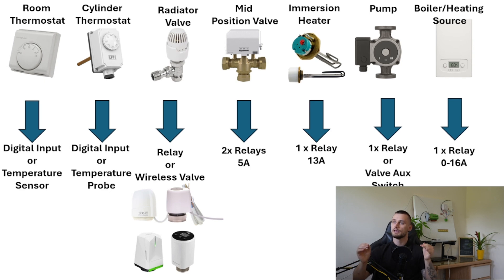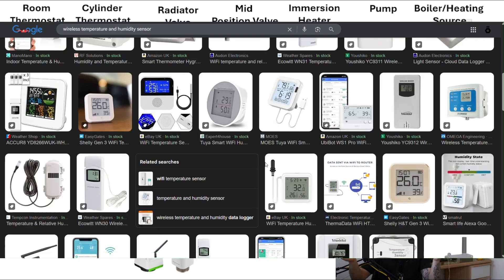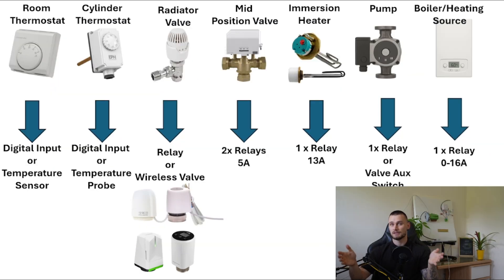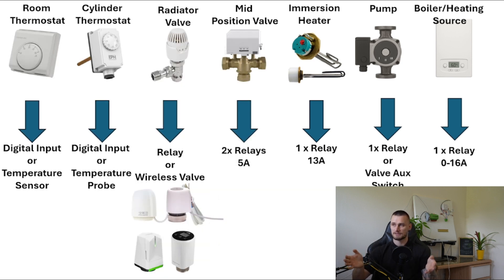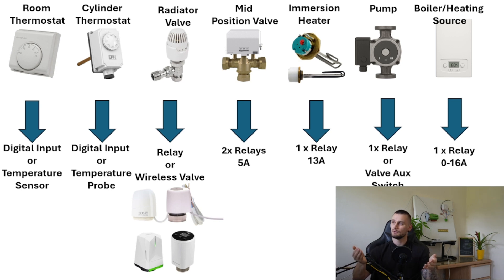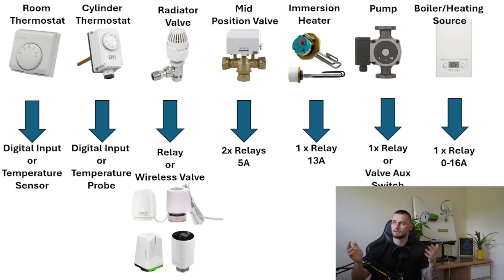If you want full system control, you can replace pretty much every single element. Room thermostats can be any wireless temperature sensor or hardwired if the property allows. The cylinder stat can become an input feeding satisfaction status back into your system. Radiator valves can be replaced with wireless or wired electronic valves. The mid-position valve is again just two relays. The immersion needs another relay, the pump can use a relay or the auxiliary switch of the mid-position valve, and the boiler typically just needs one relay or volt-free contact to call for heat.